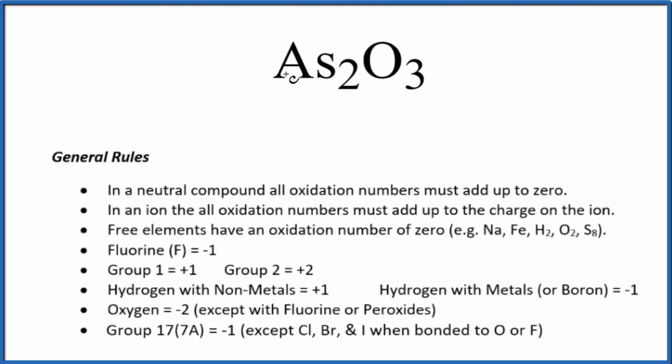In this video, we'll find the oxidation number for each element in As₂O₃. This is often called arsenic trioxide.